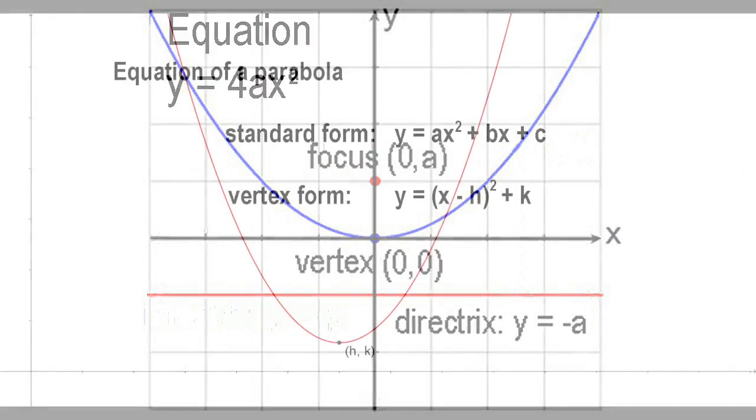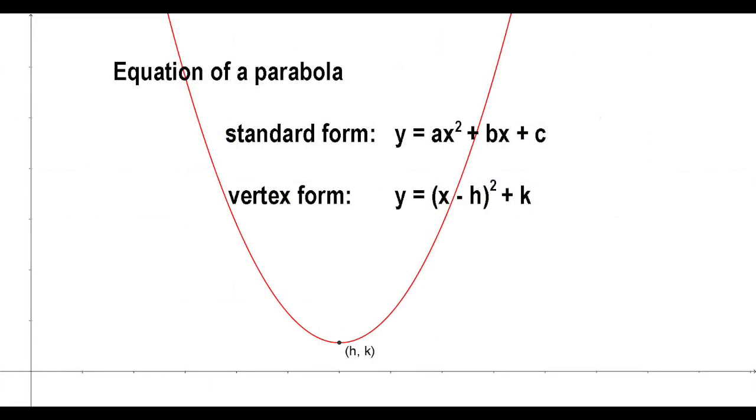More generally, any quadratic equation of the form y equals ax squared plus bx plus c, where a is not zero, gives the graph of a parabola. The simplest form of this, when a equals 1 and both b and c are zero, is y equals x squared.